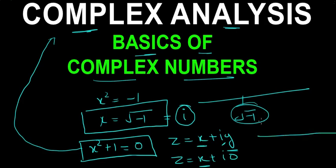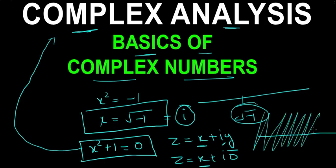The real line is contained within the complex plane where y equals 0. So the complex plane is really bigger than the real line — there are infinitely many numbers in the complex plane which do not exist on the real line.